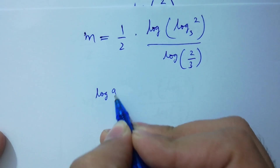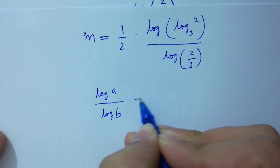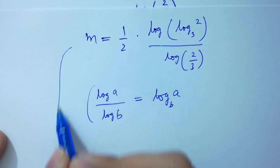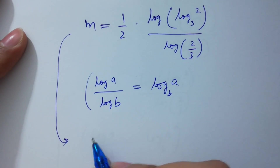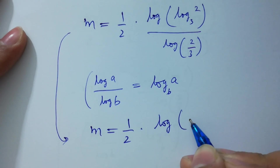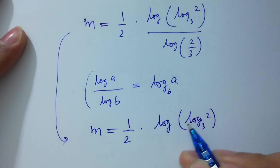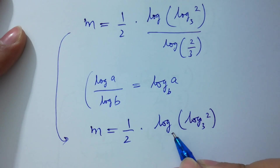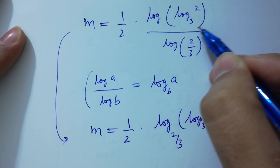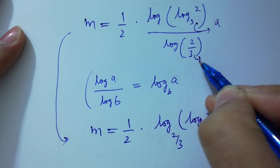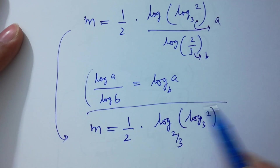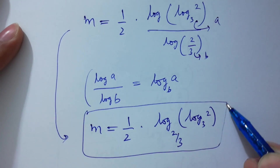Since log A over log B equal to log A to the base B, as I have already told you about it, m equal to 1 over 2 times log of log 2 to the base 3, and this is finally over base 2 over 3. So we have log A, this is equal to A and base is 2 over 3. So finally, this is the value of m.